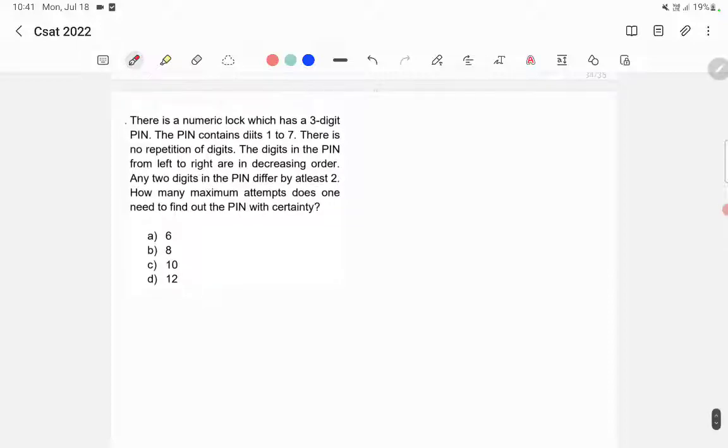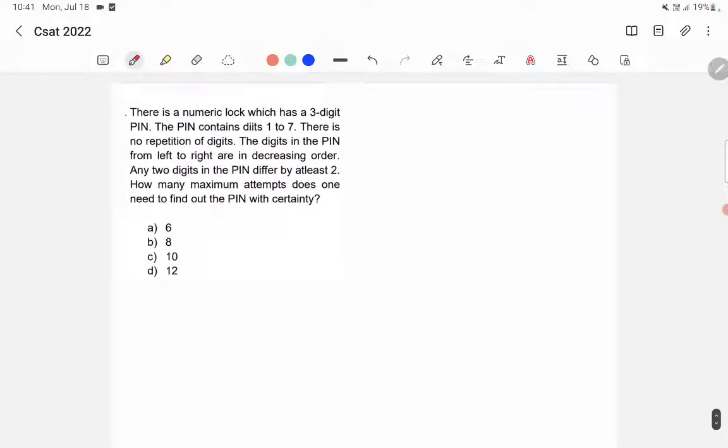The PIN contains digits 1 to 7, so we can use 1, 2, 3, 4, 5, 6, and 7 in this PIN. The digits in the PIN from left to right are in decreasing order, so the left number will be the maximum number. And any 2 digits in the PIN differ by at least 2. So we have to find out all the possibilities here.